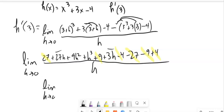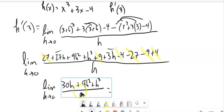Let's see. 27h plus 3h is 30h plus 9h squared plus h cubed. And that's still over h. These are all of these pieces up in the numerator divided by h. So I'm going to divide that h out of there.